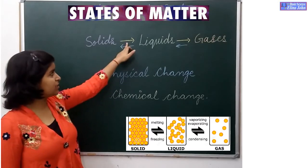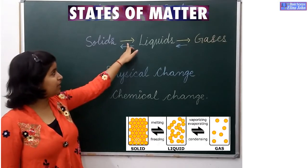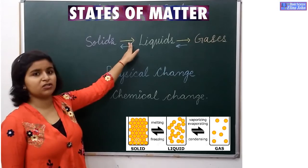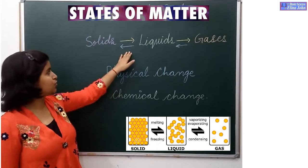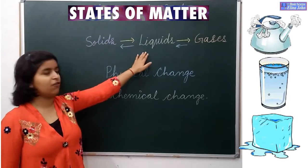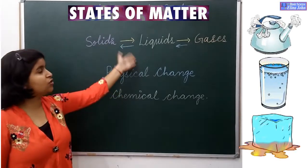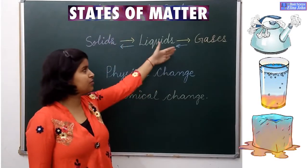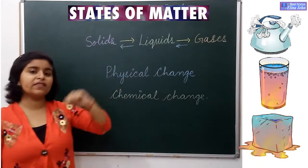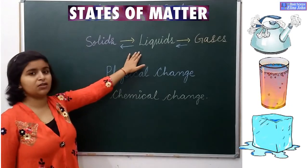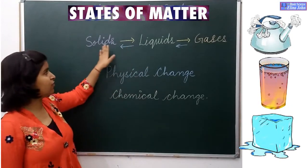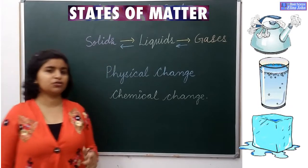Solids on heating—I have indicated the heating process with the yellow arrows and cooling process with the blue ones—will form liquids. Liquids on further heating will produce gas, and gases when cooled down will form liquids, and these liquids on further cooling will form solids. I will give you a small example.